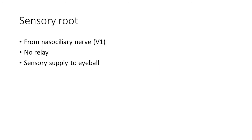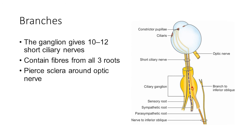The sensory root is derived from the nasociliary nerve, which comes from the first division of the trigeminal nerve. This also has no relay and provides sensory supply to the eyeball. The ganglion gives out 10 to 12 short ciliary nerves; fibers from all three roots — parasympathetic, sympathetic, and sensory — pass through these short ciliary nerves, which pierce the sclera around the optic nerve and supply their respective areas. With this we have discussed all the structures present in the orbit. Hope you found these videos useful — if you did, don't forget to like, share, and subscribe. Thanks for watching.